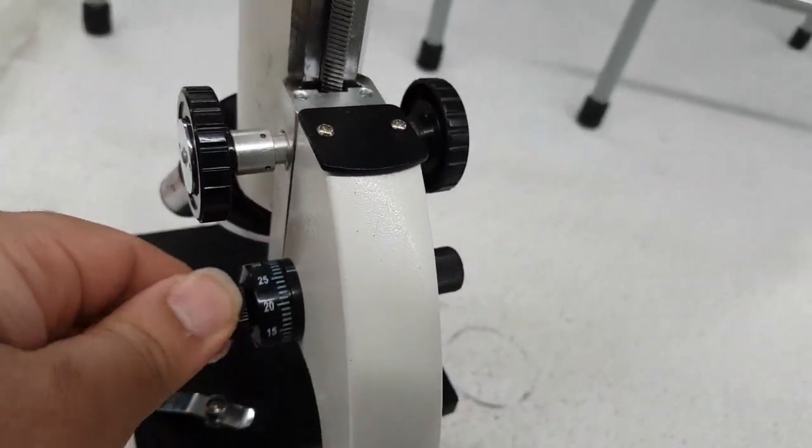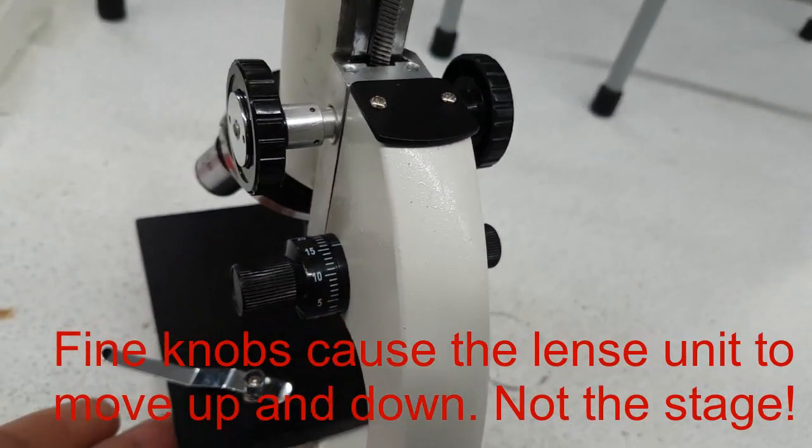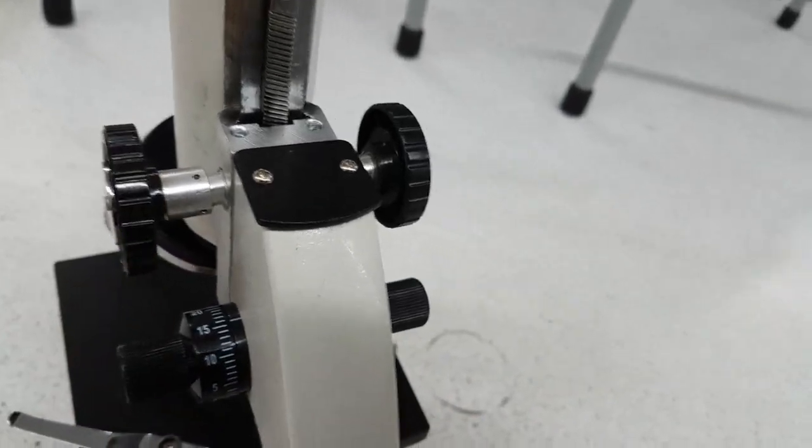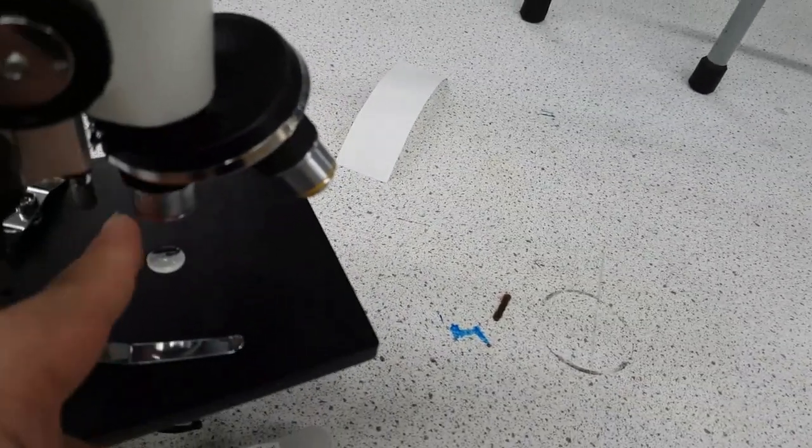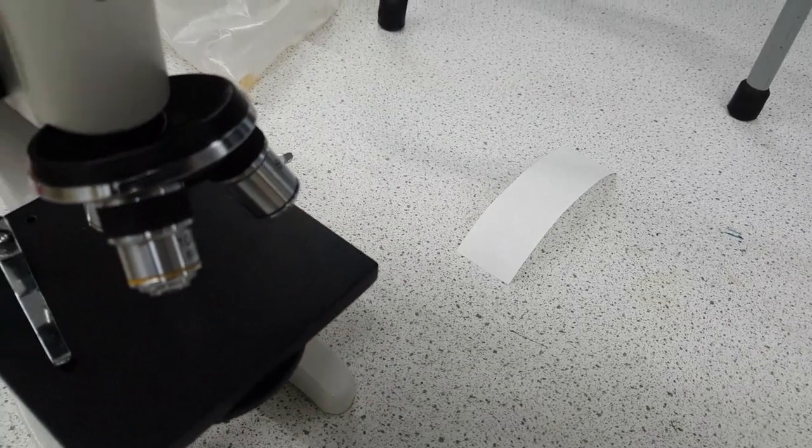And then finally you have the fine adjustment or the fine knobs which you move slowly and it causes just tiny amount of movement within the stage. Now the coarse knobs you use with the low magnification objective lens and the fine knobs you use with the other two objective lenses.